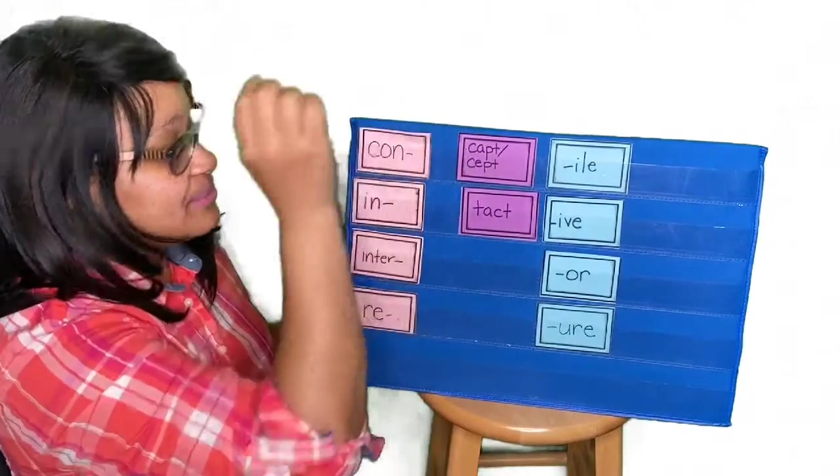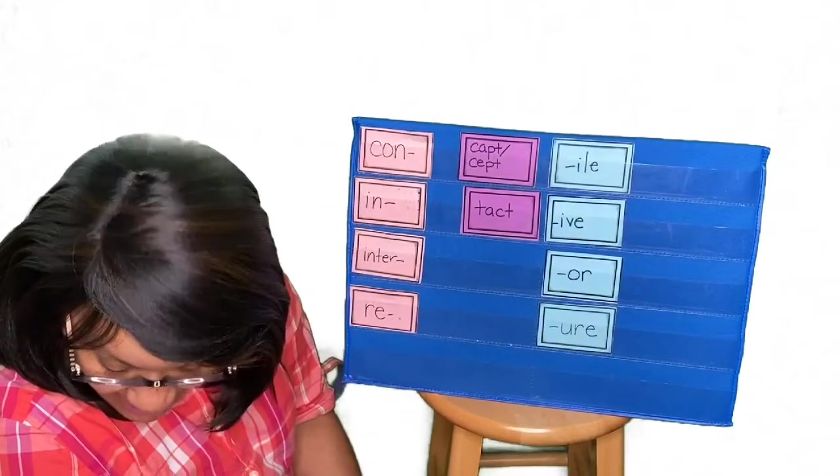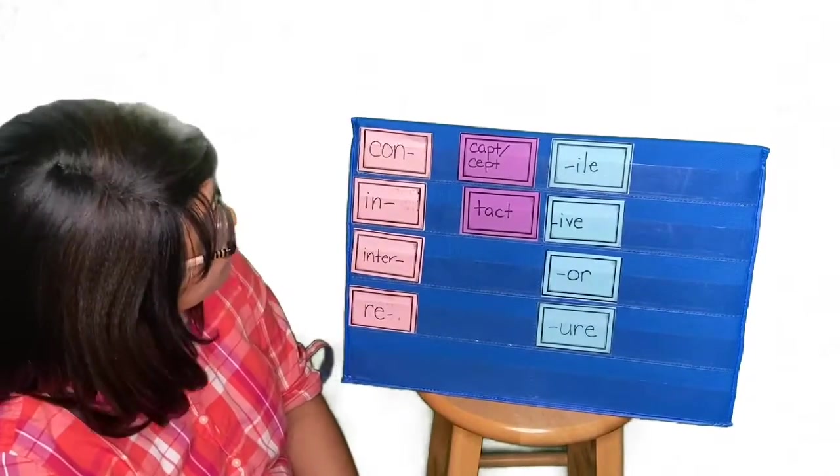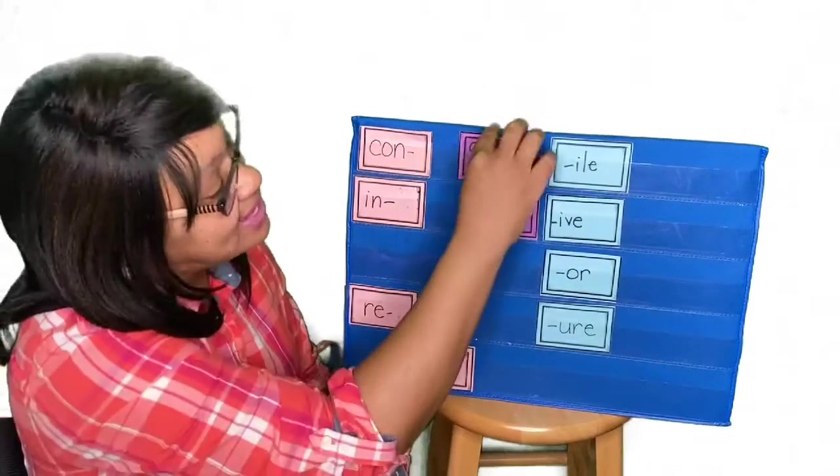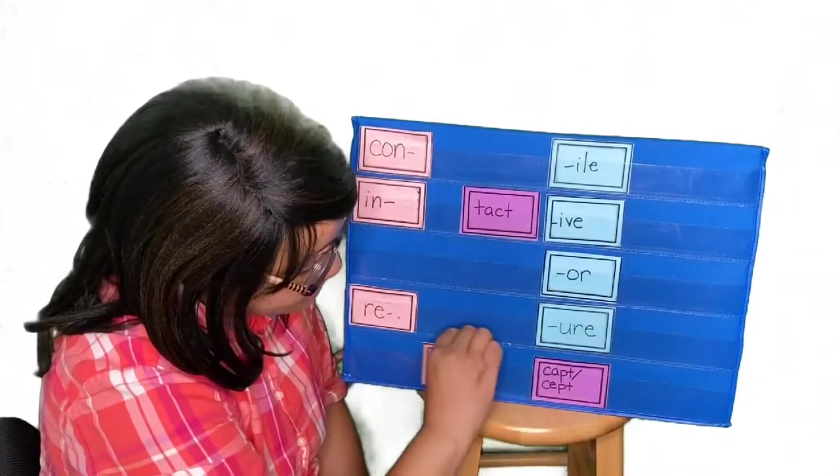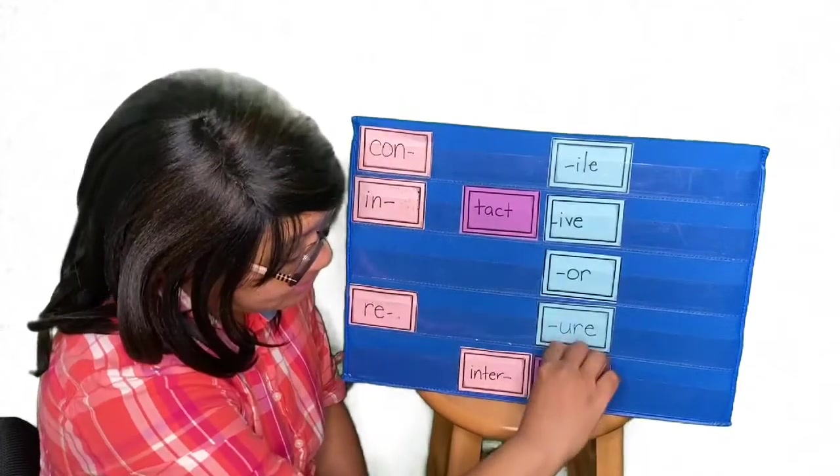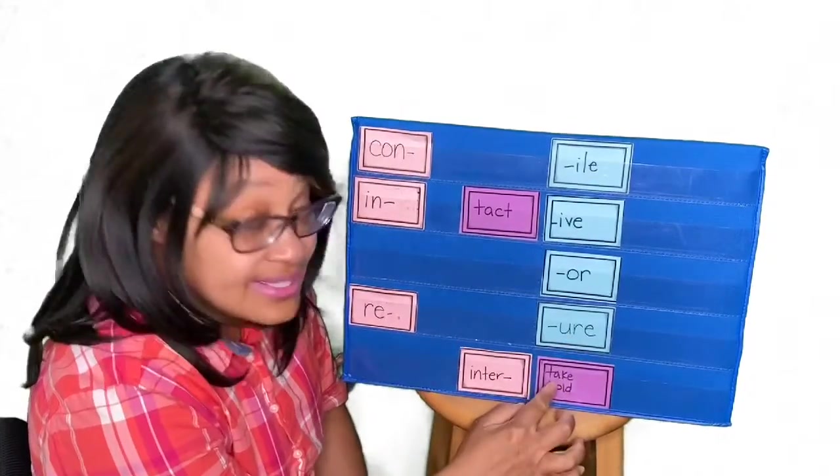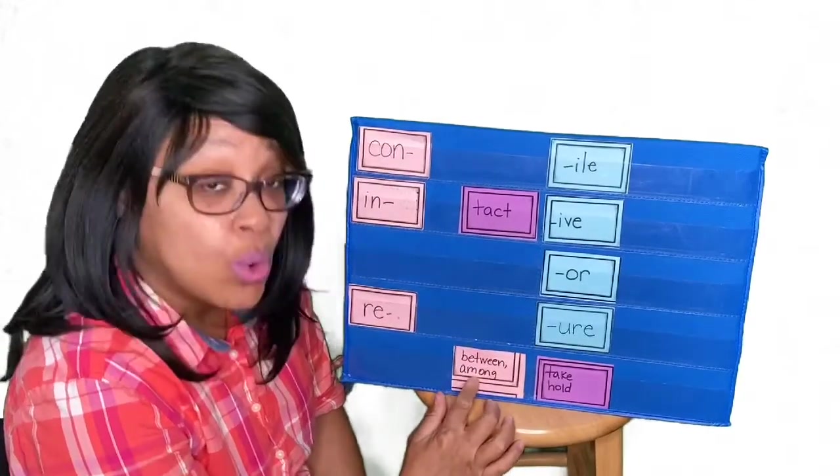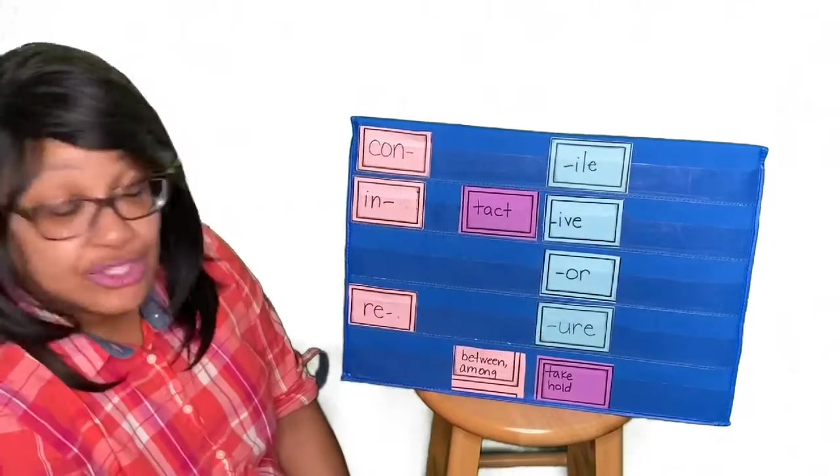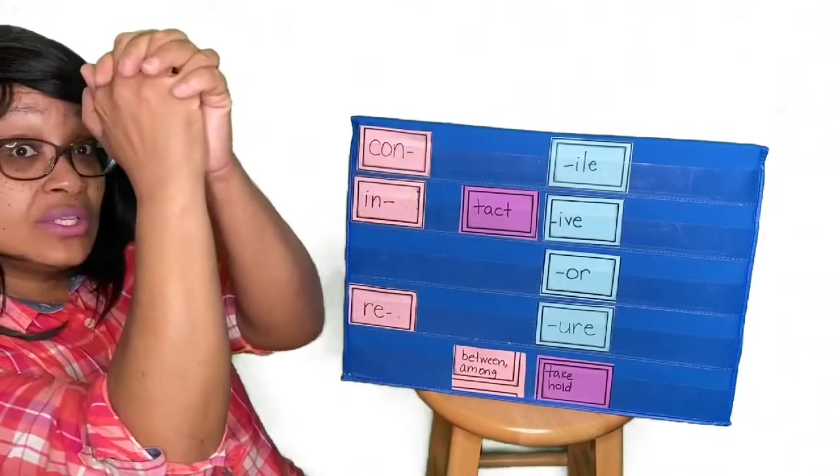Let's try this one. Let's make intercept. Intercept. So, here's inter. And now we need cept. Intercept. When you intercept something, you take hold between or among. So, if you intercept something, you take hold between.